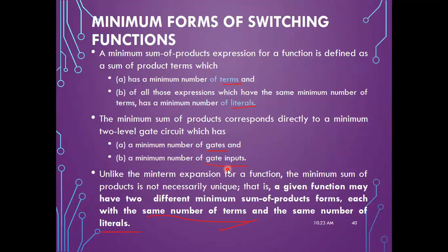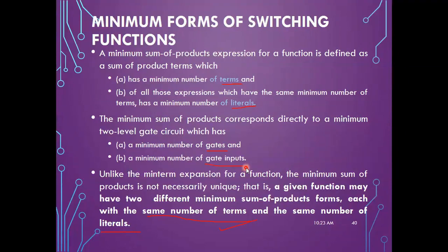The two-level gate circuit for sum of products has AND gates at the first level and OR gates at the next level. The goal is to have the minimum number of gates and gate inputs. Unlike the minterm expansion, the minimum sum-of-products form is not necessarily unique — a function may have two different minimum SOP forms, each with the same number of terms and literals.